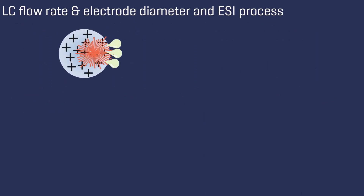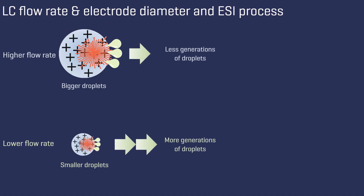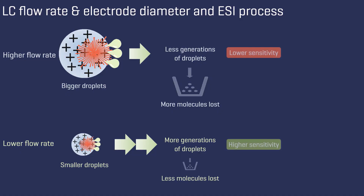The flow rate not only impacts the optimal source parameters, but also the size of the initial droplets. A lower flow rate results in smaller initial droplets, which evaporate more easily, allowing for the formation of more generations of droplets. As a consequence, fewer molecules will be lost for analysis and more molecules can be detected. When analyzing an analyte at a given concentration with different flow rates, the sensitivity can be higher at lower flow rates.